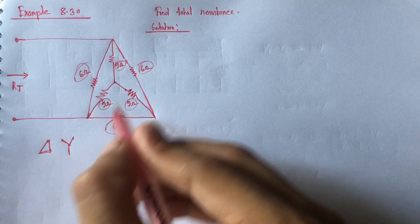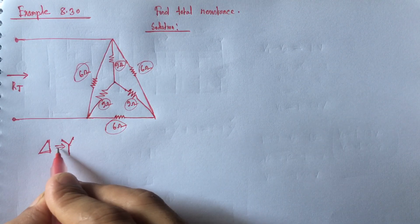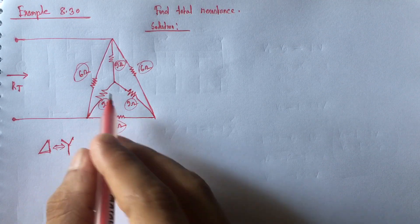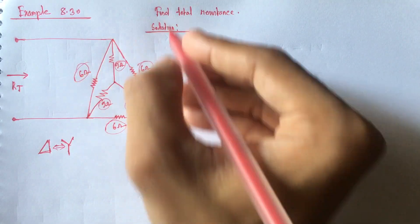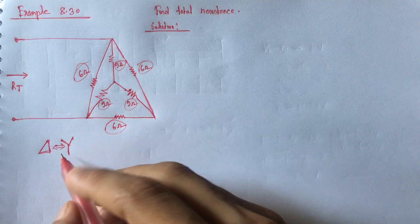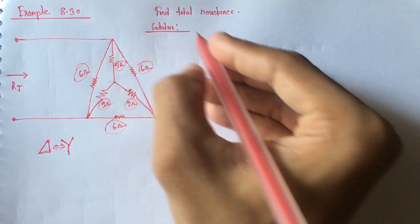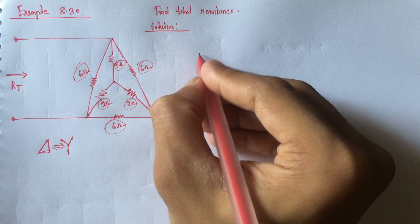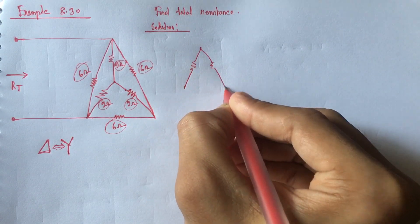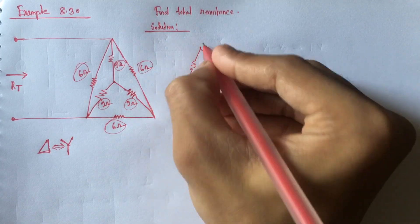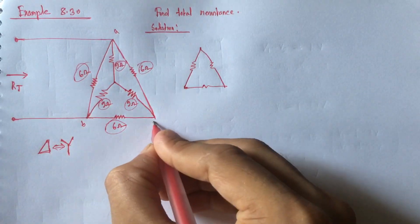For simplifying the equation, we have to convert either delta to Y or Y to delta. If we take the 6-ohm delta circuit to convert to Y, we will get nodes labeled A, B, and C.